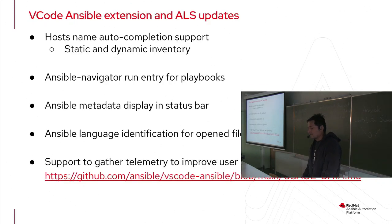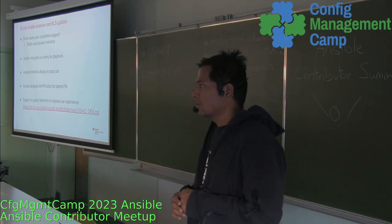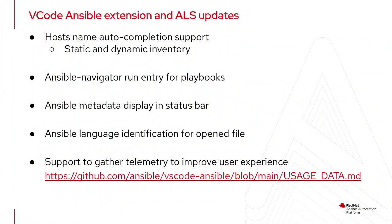After the VS Code extension was published in the initial release, it only supported module or task name autocompletions. It didn't support any other plugins — no connection plugins, filter plugins, or lookup plugins completion. It didn't have any understanding of those. So we started slowly improving on that, and the first iteration was adding host name autocompletions.